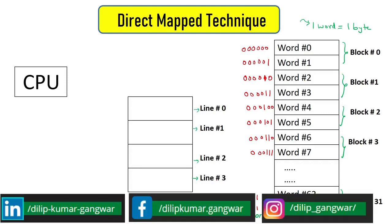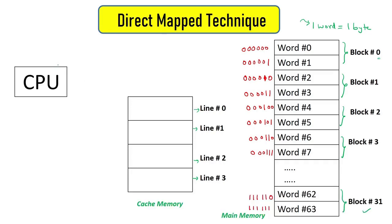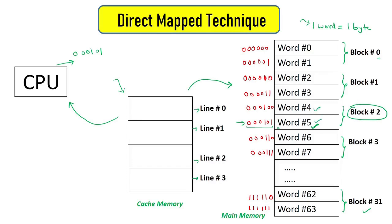There are 32 blocks in main memory starting from block 0. Whenever the CPU asks for data, it generates an address. Say the CPU wants word number 5 — it generates the corresponding address, then looks for that word in cache memory. If present, it is given to the CPU; if not, we search main memory. Word 5 is in main memory, and rather than giving just word 5, we give the whole block 2 to cache due to locality of reference, so word 4 and word 5 both come to cache.